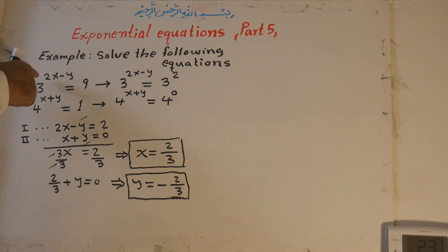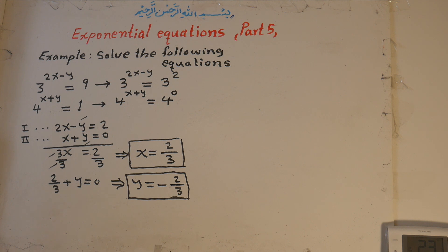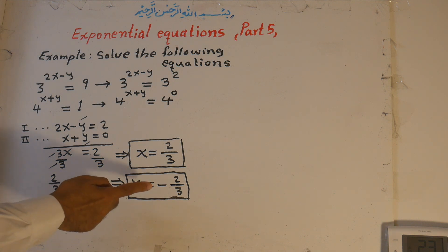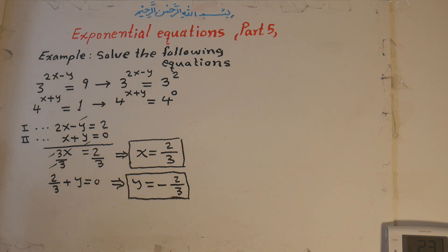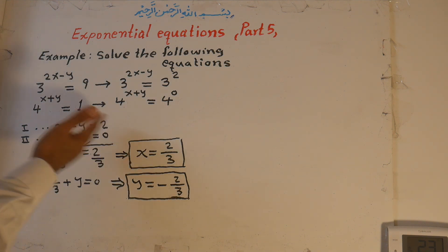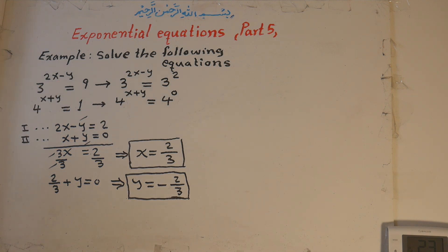If we plug these values of x and y into each equation, both sides become equal. In the first equation: two over three times two gives four over three, and the y term gives positive two over three, making six over three, which equals two. So three to the power of two equals nine. For the second equation: two over three plus negative two over three equals zero, and four to the power of zero equals one. Verified.